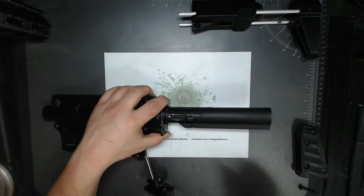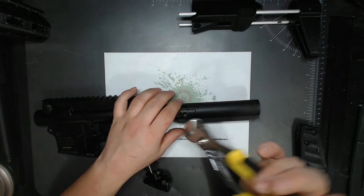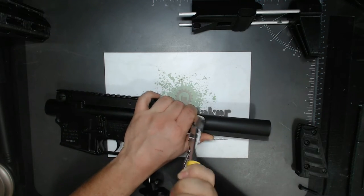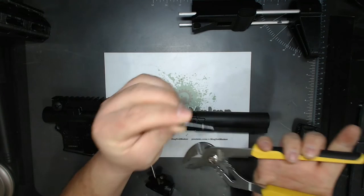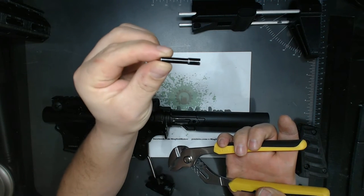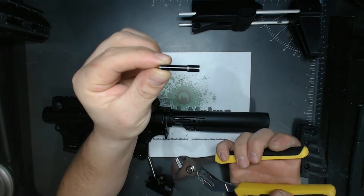So once you get that punched out, you may need some pliers to remove it, because it is in there pretty tight. There's the pin, and you can see why it has to go only one way.